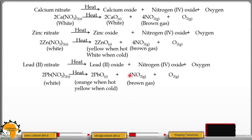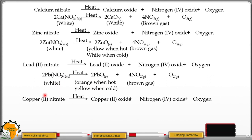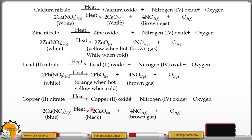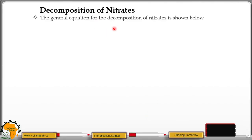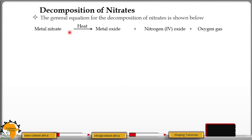Lead nitrate similarly gives nitrogen dioxide, oxygen gas, and lead(II) oxide. Lead(II) oxide is orange when hot and yellow when cold. The lead nitrate solid is white. For copper(II) nitrate, heating gives copper(II) oxide plus nitrogen dioxide plus oxygen gas. Copper(II) nitrate is blue in color, but copper(II) oxide is black, and nitrogen dioxide is a brown gas. The general equation for the decomposition of nitrates shows: metal nitrate → metal oxide + nitrogen dioxide + oxygen gas.